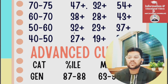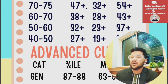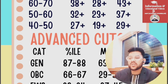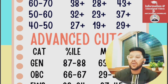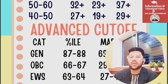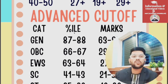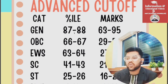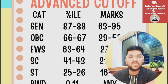For General category, the marks requirement for the second attempt is 63 to 95 — easy paper 95, hard paper 63. For OBC: 66 to 67 percentile, marks 29 to 50. For EWS: 63 to 64 percentile, marks 27 to 45. For SC: 41 to 43 percentile, marks 21 to 32. For ST: 25 to 26 percentile, marks 16 to 26. For PwD: only 0.11 percentile — once you reach the center you are qualified.